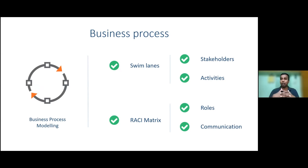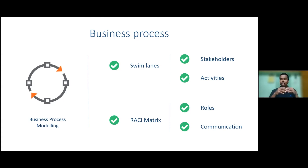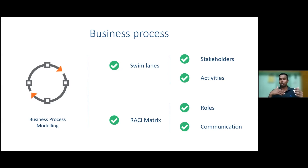The next step is the RACI matrix — Responsible, Accountable, Consulted, and Informed. You take all your stakeholders, chart what roles they play and what activities they do, then fill out the matrix. Once done, communicate it to all stakeholders, run a consultation process, settle on it, and then it helps with change management — everyone knows what they're expected to deliver and when.